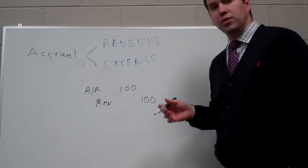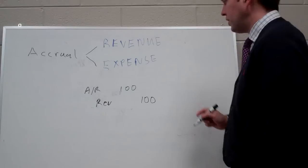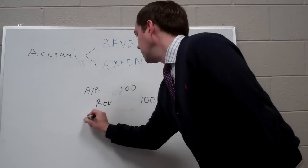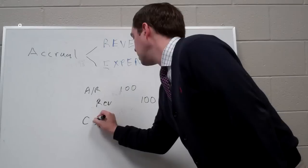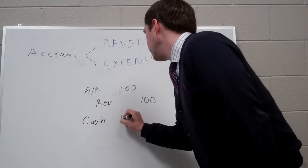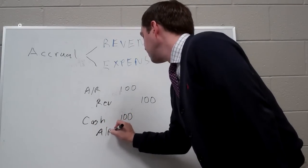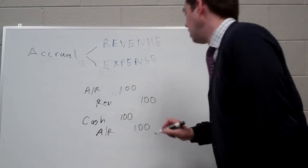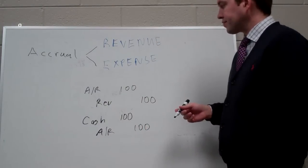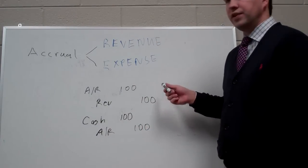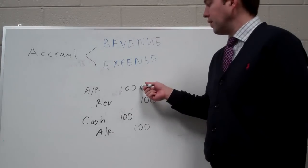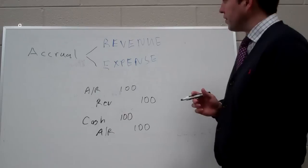Sometimes down the road the customer will pay us, hopefully. When that happens, we can debit cash for $100 and take the receivable off the books. But this right here is the accrual entry where we accrue the revenue in the current period.